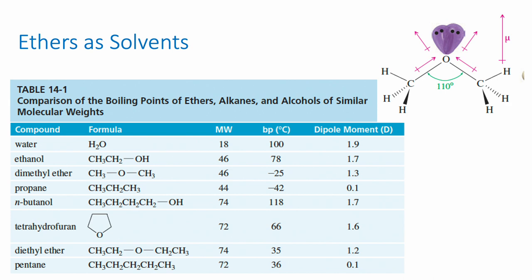That lower boiling point is because we have removed the oxygen-hydrogen bond, so the ether is no longer capable of hydrogen bonding with itself. The major intermolecular force in ethers is dipole-dipole, which makes the boiling point drop significantly. Comparing to a similar molecular weight alkane like propane, propane doesn't have hydrogen bonding or dipole-dipole — only van der Waals forces — so its boiling point drops even lower.